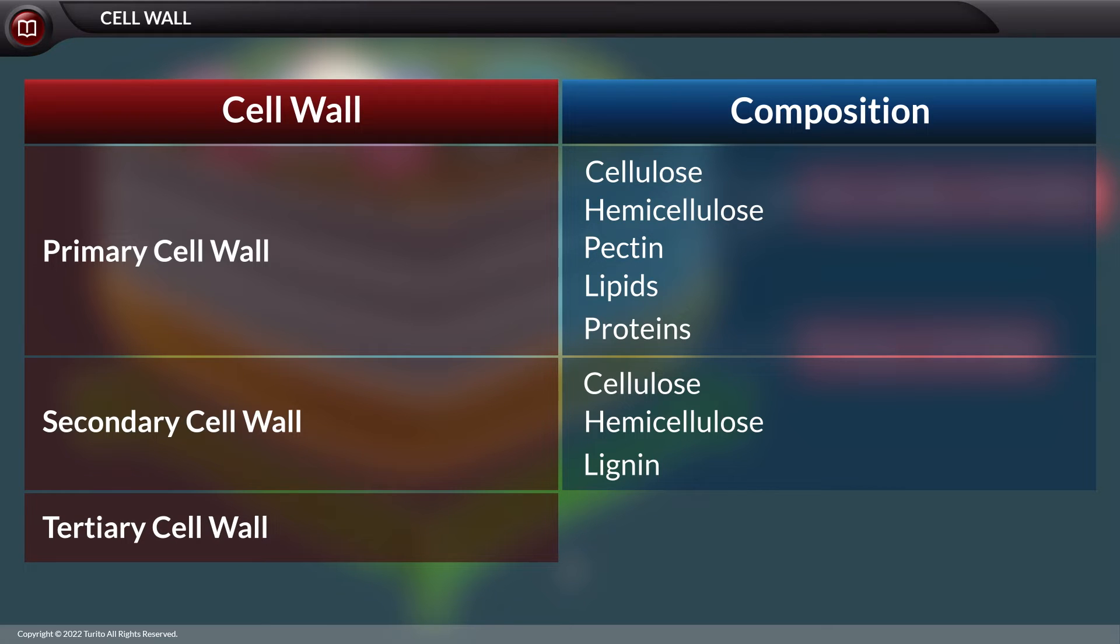The tertiary cell wall, if present, is very thin, made up of xylan, and provides density to the cell.